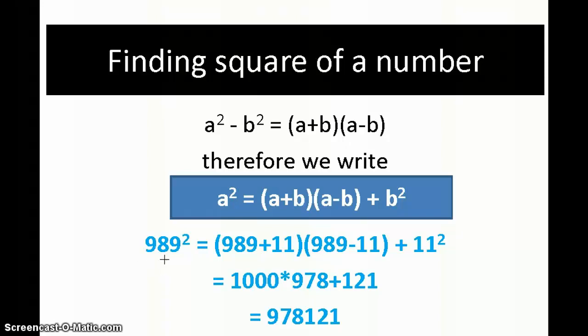Just check out the example: 989 squared. I can write it in the above form as (989+11)(989-11) + 11². So 989 plus 11 gives 1000, and 989 minus 11 gives 978. I multiply 978 times 1000, which gives 978000, then I add 121, so it becomes 978121.